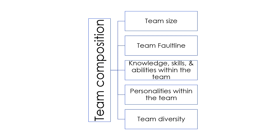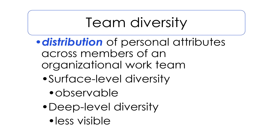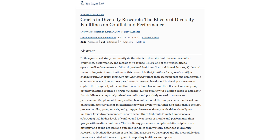The fifth attribute in team composition is team diversity. Team diversity doesn't simply refer to a team's demographics; it also refers to physical locations, status, seniority, nationality, cultural norms, personality, values, motivations, individual knowledge, and expertise. Team diversity refers to the distribution of personal attributes across members of an organizational work team. Surface-level diversity reflects differences that are more readily observable — for example, race and gender. Deep-level diversity reflects differences that are less visible — for example, personality and values. The distinction between these two types is important because demographic attributes may not be as relevant to a team's given tasks, but they shape members' perceptions and behaviors.